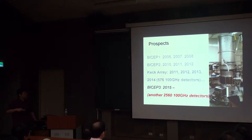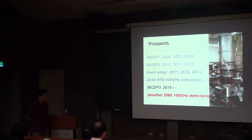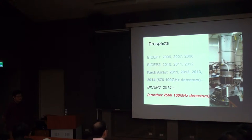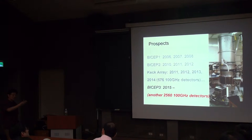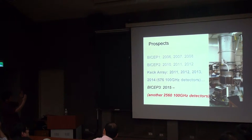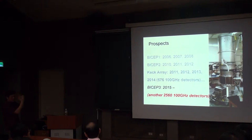Even more significantly, we deployed a whole new experiment just a few months ago — we achieved first light in January. That will have another two thousand 100 GHz detectors. At 100 GHz, the contribution from dust is a factor of six smaller compared to 150 GHz. Remember how close we are to distinguishing these three models — if you can just shrink that error by a factor of two, you might zoom in on one of the models.